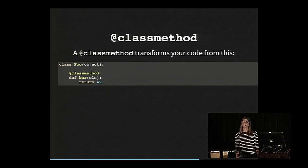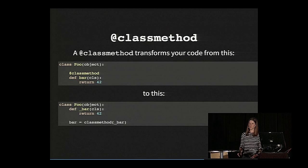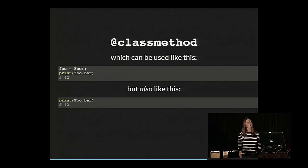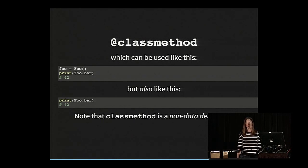And the other hand, class method transforms your code from something like this into this special class method attribute. And the way you use that is you call it either on an instance or you can call it on the class itself. And this is also a non-data descriptor. And I'm not going to go over static method, but that's similar.